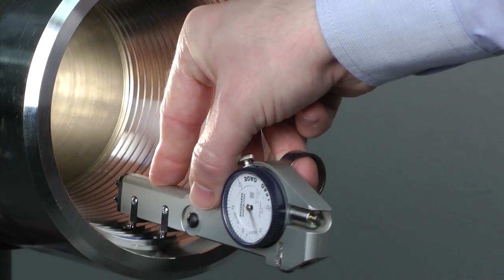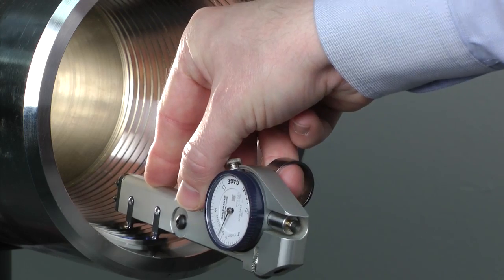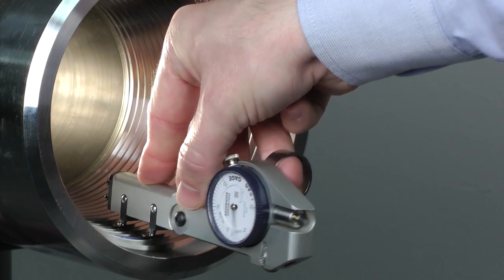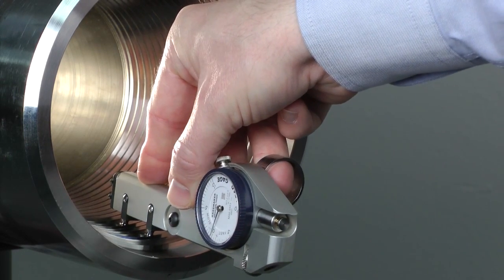Lead gauges inspect both internal and external lead for a variety of thread forms including 8-round, 10-round, buttress, and rotary-shouldered connections.